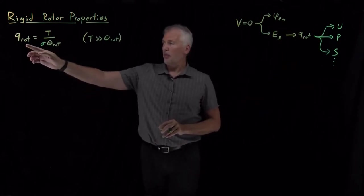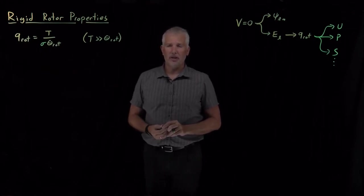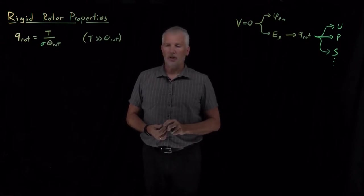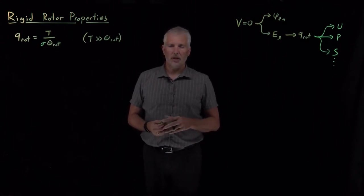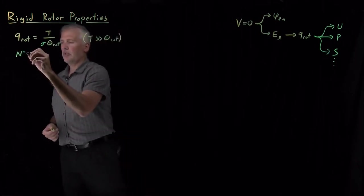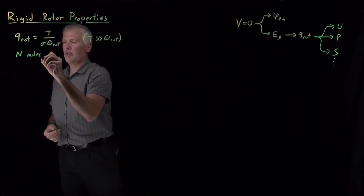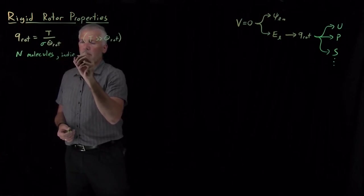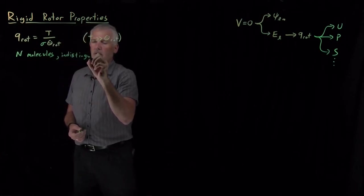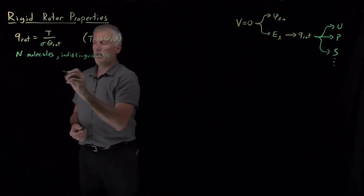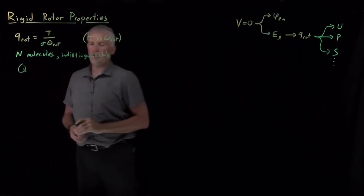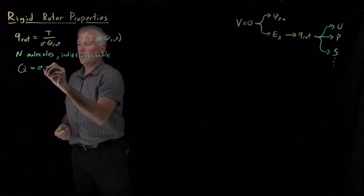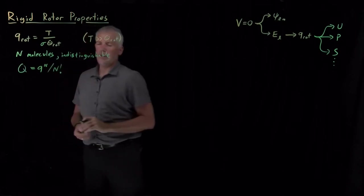We could do that with our small-q partition function. That would tell us the thermodynamic properties for a single molecule of a gas. As usual, when we talk about gases, we're more interested in a collection of many molecules. If we're talking about N molecules of a gas that are all indistinguishable from one another, then the partition function for those N identical and indistinguishable molecules would be little q to the N divided by N factorial.